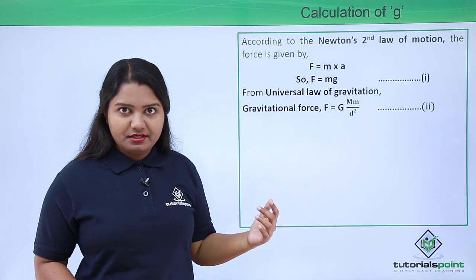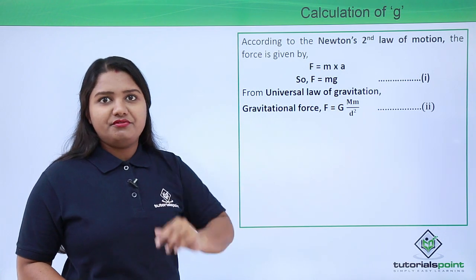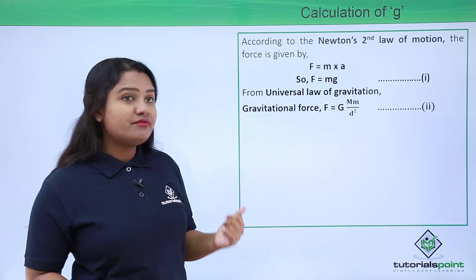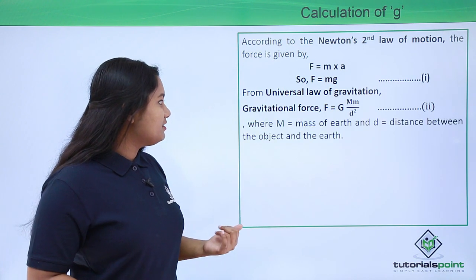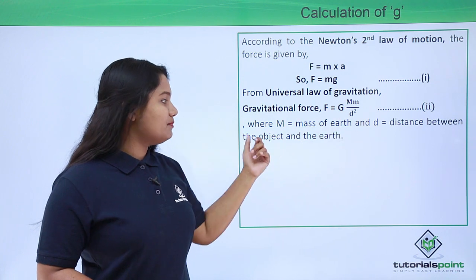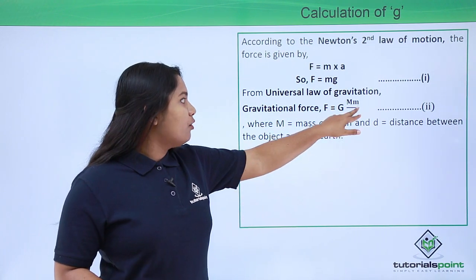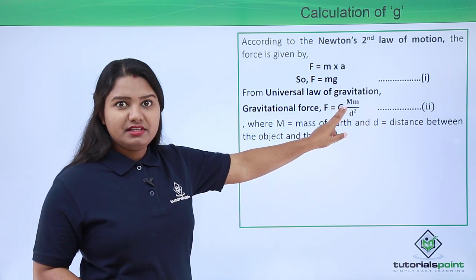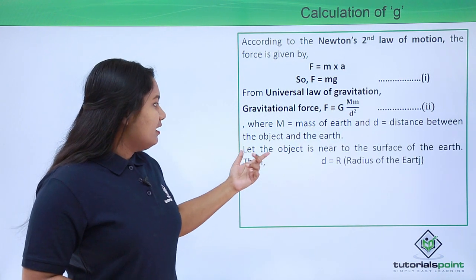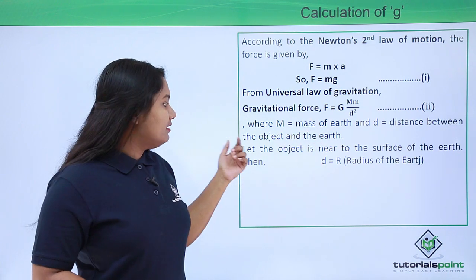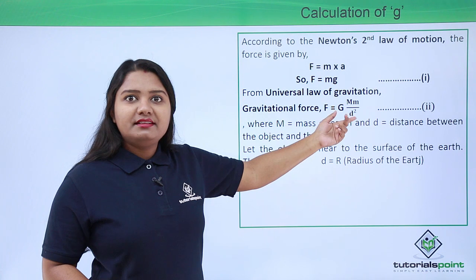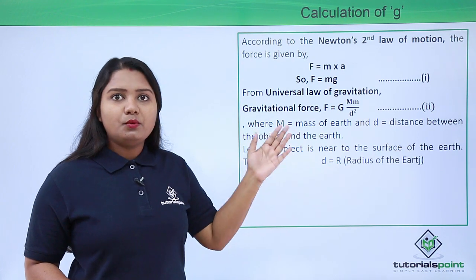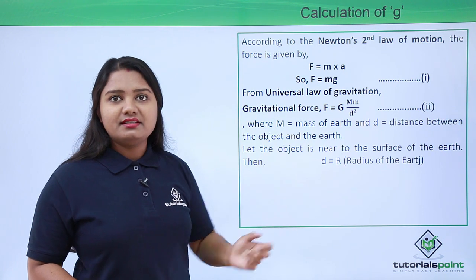This expression refers to the gravitational force, and the previous expression also refers to the gravitational force — we are looking at the same force through two different perspectives. In this expression, capital M is the mass of the Earth, d is the distance between the object and the Earth, and small m is the mass of the object. Capital G is the universal gravitational constant. When the object is near the surface of the Earth, the distance d can be taken as nearly equal to the radius of the Earth, r.